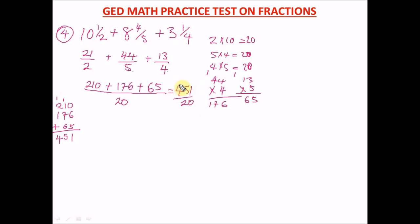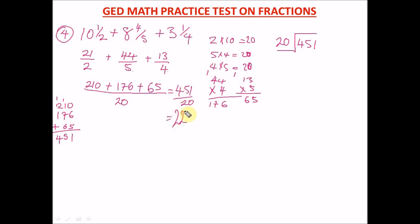To convert 451 over 20, we do long division: 20 goes into 45 two times (2 × 20 = 40), leaving a remainder. 45 − 40 = 5, bring down the 1 to get 51. 20 goes into 51 two more times (2 × 20 = 40), remainder 51 − 40 = 11. So we have 22 whole number and 11 over 20.